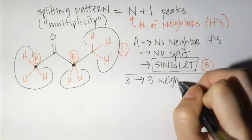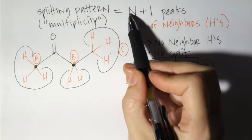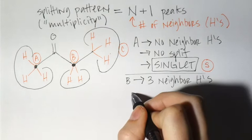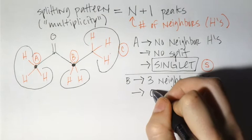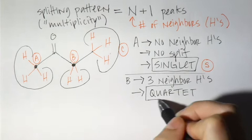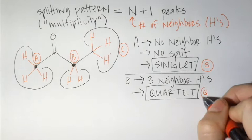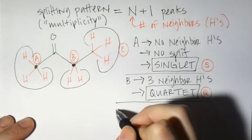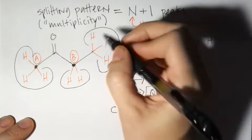With three neighbors, N+1 gives four peaks — we call that a quartet. A quartet is abbreviated 'q'. Peak C represents those three hydrogens; the neighboring carbon has two H's, so it has two neighbors. Two plus one gives three peaks — a triplet, abbreviated 't'.